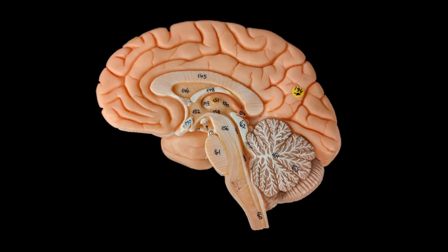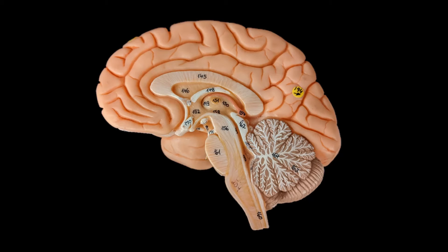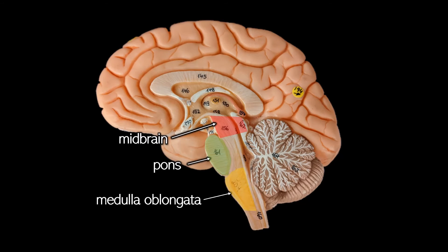The diencephalon has two major sub-regions: the thalamus and the hypothalamus. The brain stem has three major sub-regions, which are the midbrain, pons, and medulla oblongata.